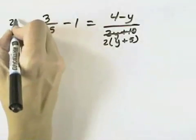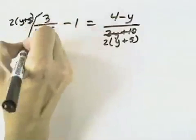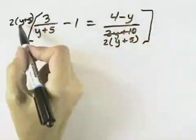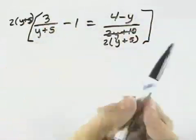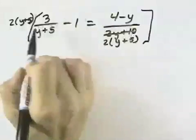So we're going to multiply our entire expression by 2 and y plus 5. Now, notice we're just multiplying by 2 and y plus 5, not the same thing over itself. The reason is because of this equal sign. You can multiply as long as you multiply both sides of the equal sign.